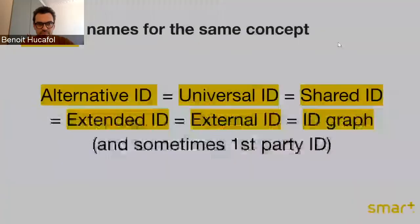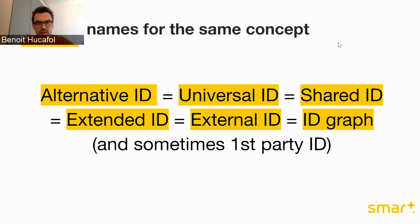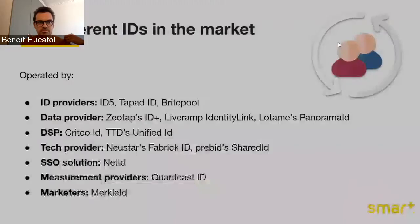In terms of naming, you may hear different names for alternative IDs. We've chosen the term 'alternative ID,' but you can also hear 'universal IDs,' which encompasses the idea of one universal ID for the whole ecosystem. You may also hear 'shared ID,' 'extended ID' — the more technical name used in the OpenRTB standard — 'external IDs,' 'ID graphs' because these IDs can sometimes graph users across multiple domains, and sometimes 'first-party IDs.'